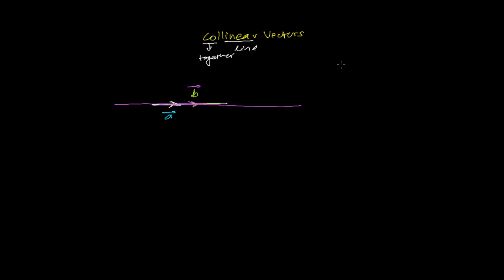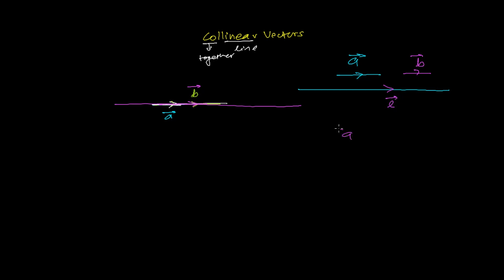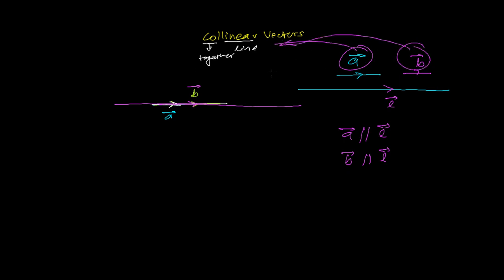But the direction should be parallel or anti-parallel to a line. For example, if this is vector A and this is our reference line L, and here I have another vector B — though it is smaller, that doesn't matter — vector A is parallel to line L and similarly vector B is parallel to line L, so I can say that vector A and vector B are both collinear vectors.